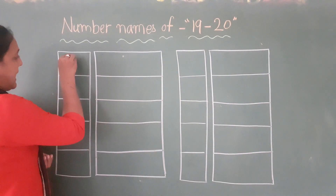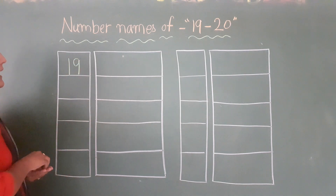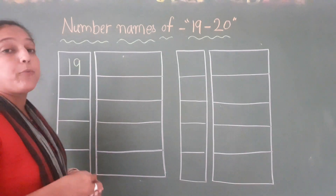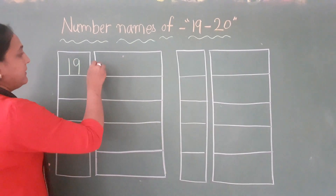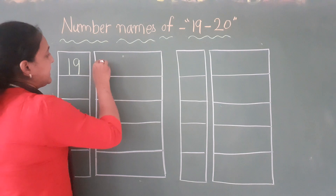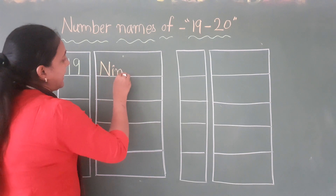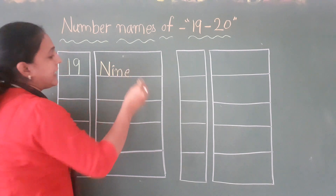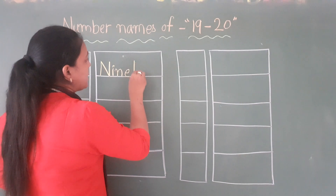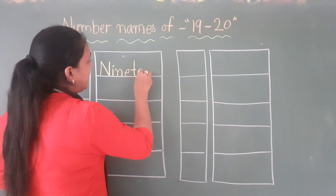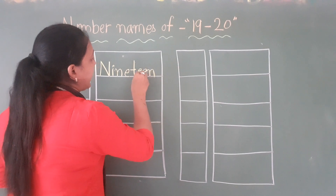Pehle hum likhenge 19. Toh aapko 9 ka spelling toh aata hi hai. Kya hota hai 9 ka spelling? N-I-N-E. Bas, uske aage laga do. 90 — W-N. 19.